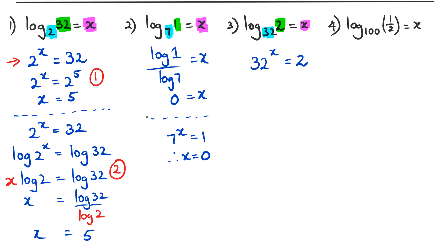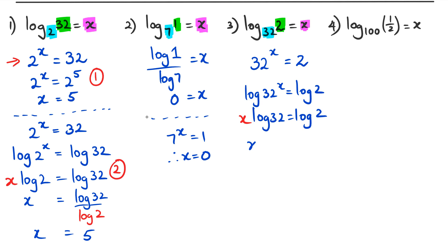Taking logs of both sides: log(32^x) = log(2). Bringing x to the front gives x·log(32) = log(2). Rearranging, x = log(2) / log(32), and of course x equals 0.2 — same as the calculator result — or 1/5.